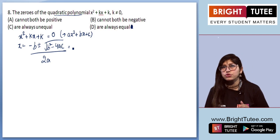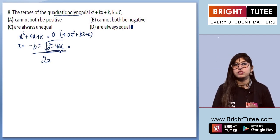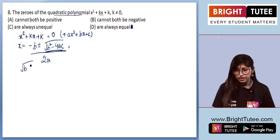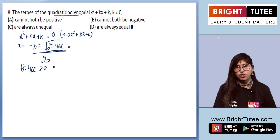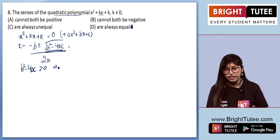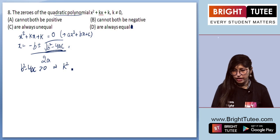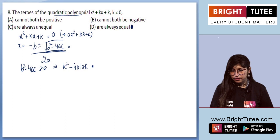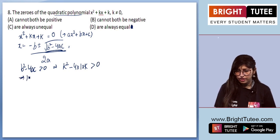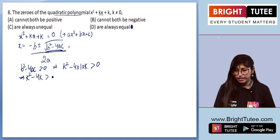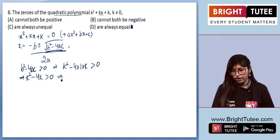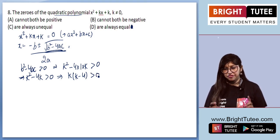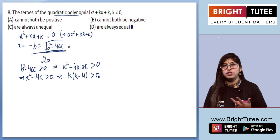For real roots, the discriminant D = b² − 4ac must be greater than 0. Substituting the values: k² − 4(1)(k) > 0, which gives us k² − 4k > 0, or k(k − 4) > 0.